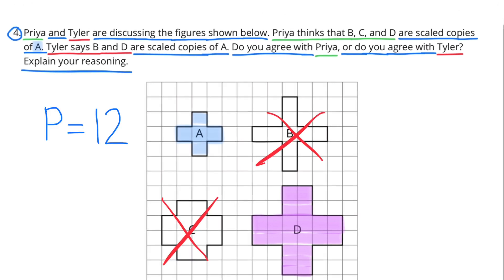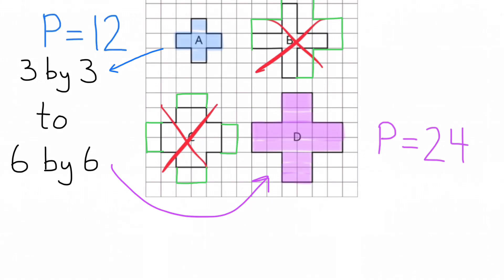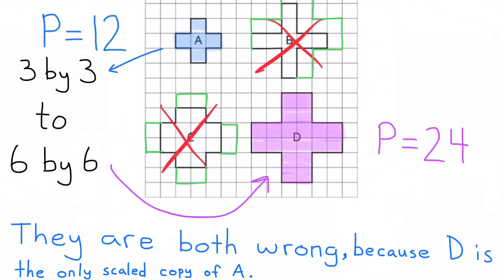The perimeter of A is 12 and the perimeter of D is 24. For figures B and C, I've outlined in green what the perimeter would look like if they were scaled drawings. Figure A has a height and width of 3 by 3 and figure D has a height and width of 6 by 6. It turns out that both Priya and Tyler are wrong because D is the only scaled copy of A.